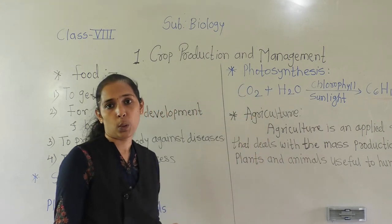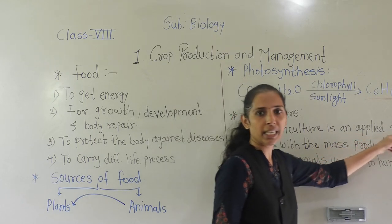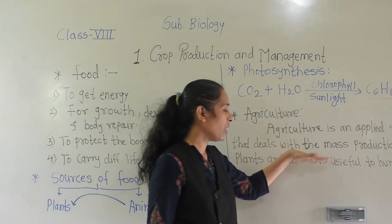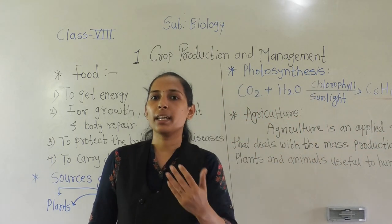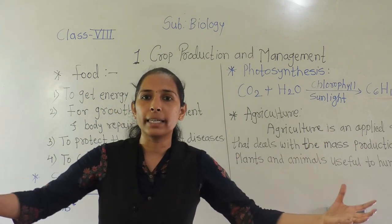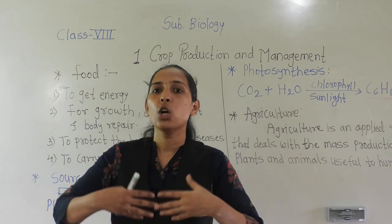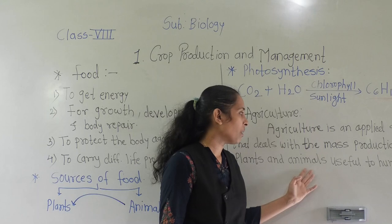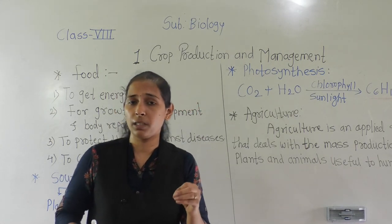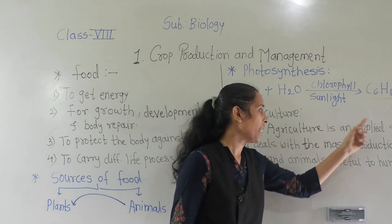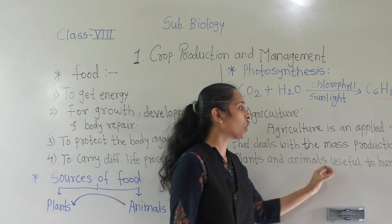So in this way the term agriculture was born. Now we will discuss the definition of agriculture. Agriculture is an applied science that deals with the mass production of crop plants and animals useful to human beings. So agriculture is about the production of crops in plenty — mass production of crop plants — to produce plants in large amounts, and also from animals we get various useful things.